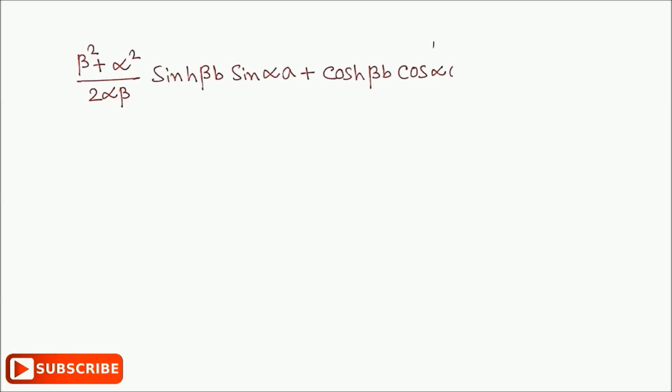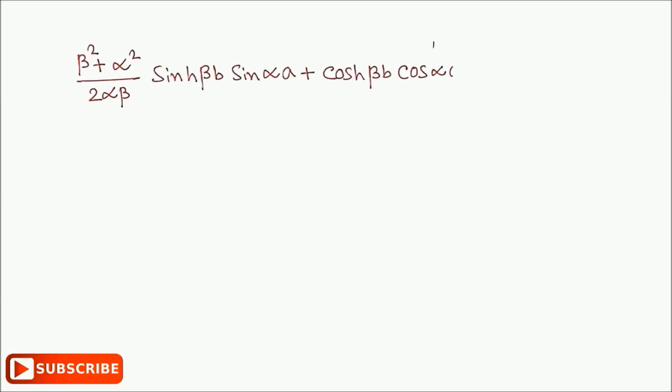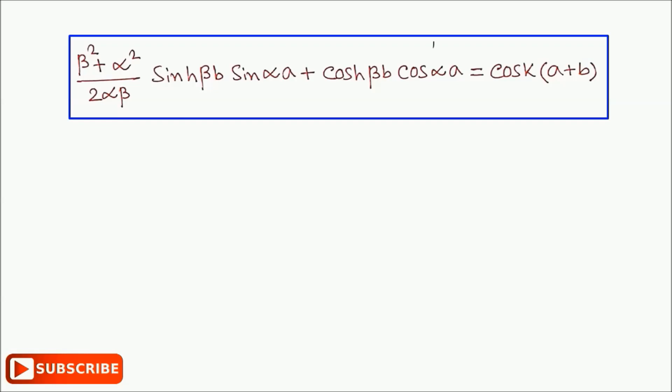(β² + α²)/(2βα) sinh(βb) sin(αa) + cosh(βb) cos(αa) = cos(k(a+b)).